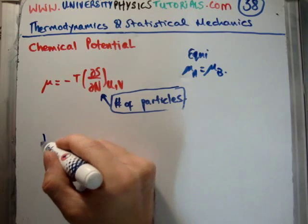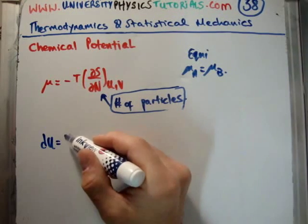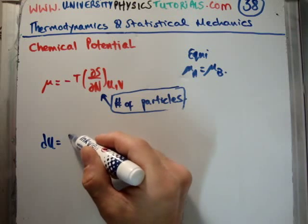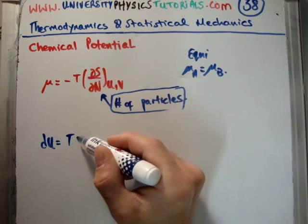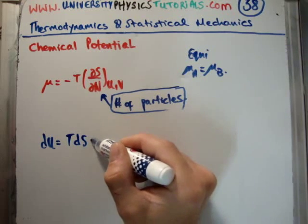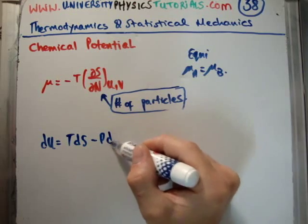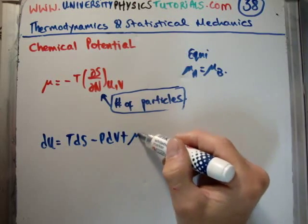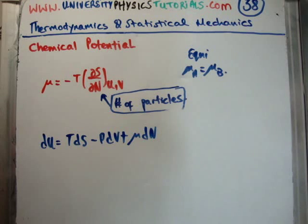Now, the thermodynamic identity proved in video 36 was that the infinitesimal change of the total energy is TdS minus PdV plus μdN.